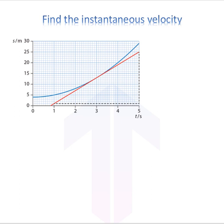Welcome to Tribe Topper. So how do we find the instantaneous velocity from the graph like this? We have a blue curve which is the displacement versus time graph and it's a variable velocity.